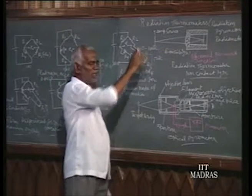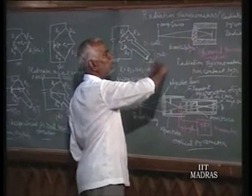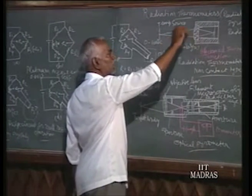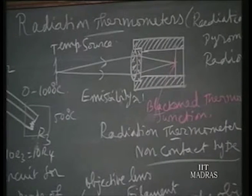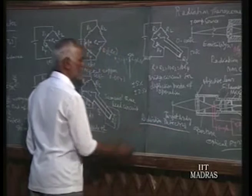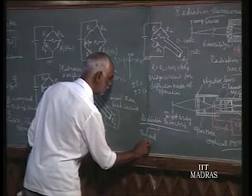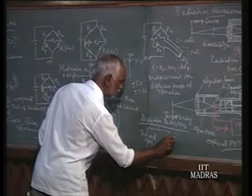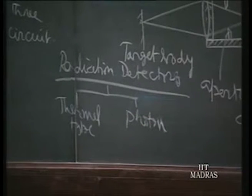In this radiometer, radiation is collected from a distant body and made to converge by an objective lens to the focal point of the lens system. At that convergence point, the radiation must be detected using radiation detectors. These radiation detectors are of two types: one is thermal type, and the other is based on photons — photocell or photon-based detectors.